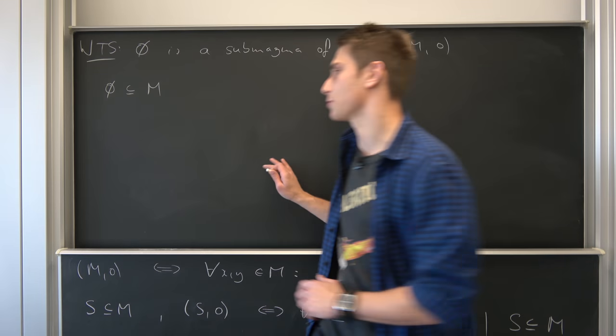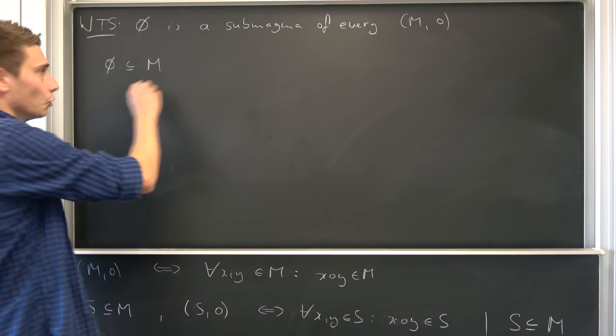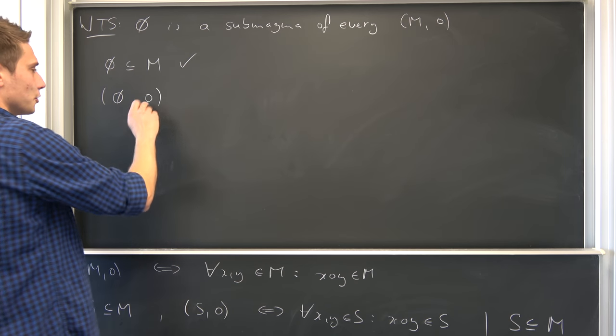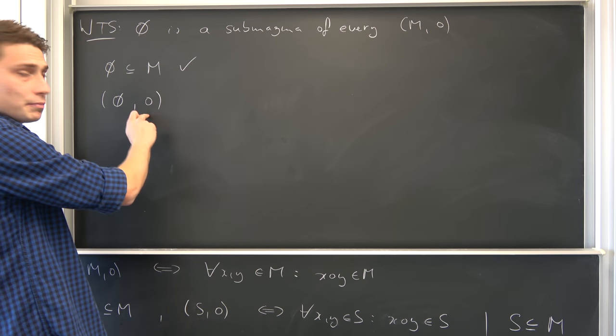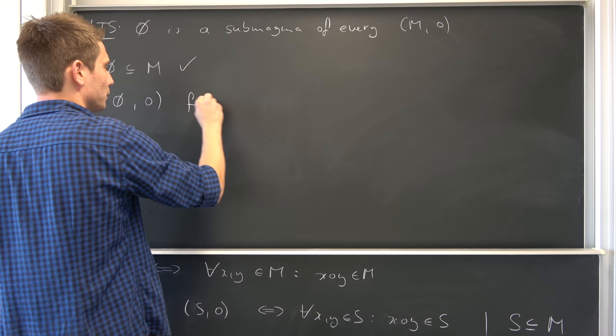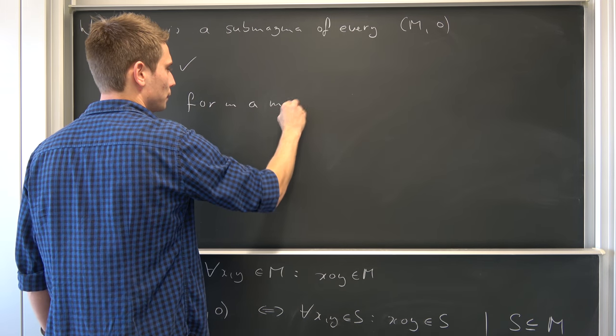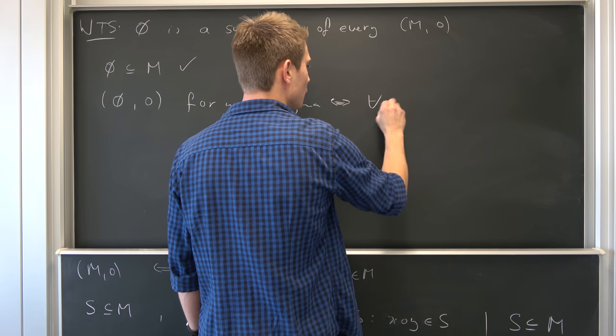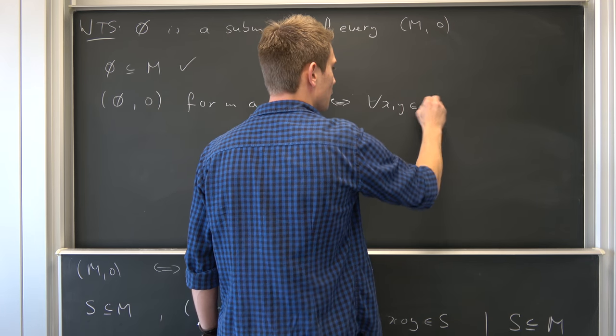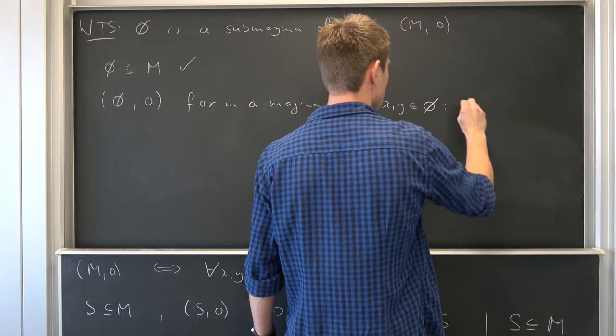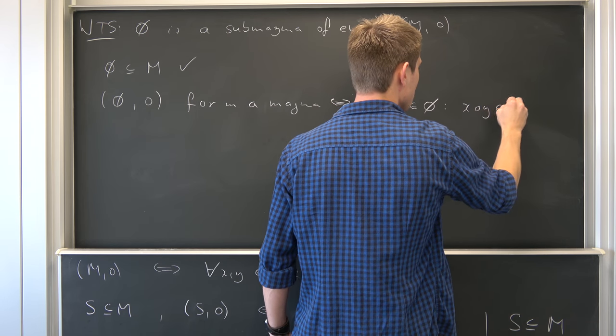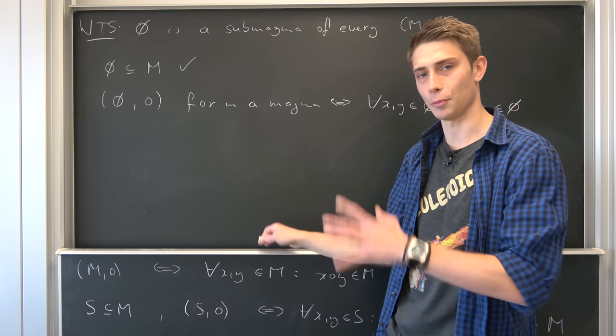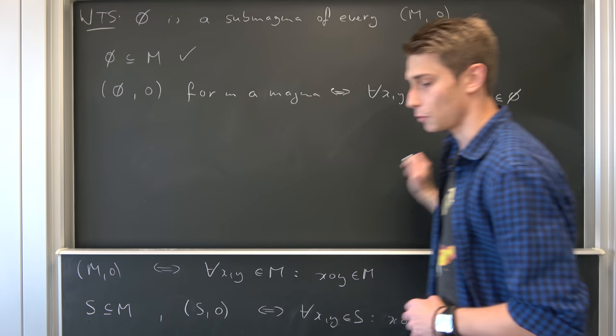Now all that we have to show since this right here holds, we have to show that this empty set and the operation of its mother set M form a magma. Meaning that's equivalent to saying that for all X and Y element of the empty set, we have that X in composition with Y is once again element of the empty set.